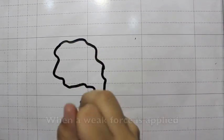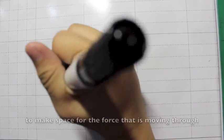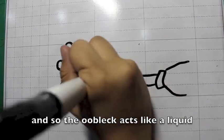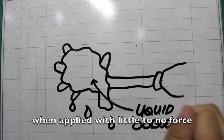When a weak force is applied, the particles are able to move around to make space for the force that is moving through. And so the OOBLEC acts like a liquid when applied with little to no force.